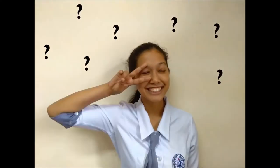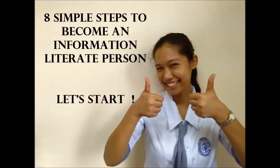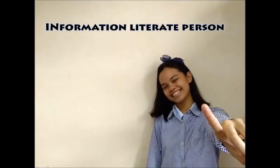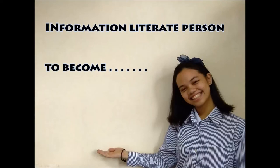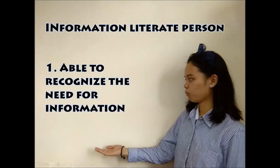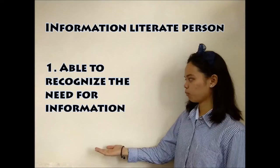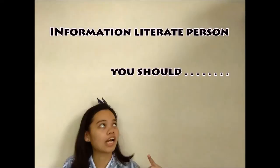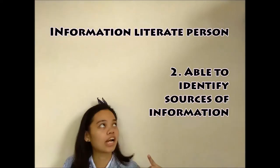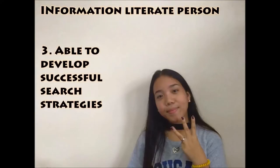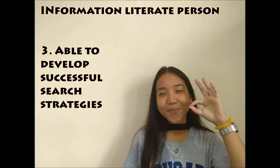Do you have the ability of an information literate person? If not, then you should follow these 8 simple steps. First and foremost, to become an information literate person, you should be able to recognize the need for information. Second, you should be able to identify sources of information. Third, you should develop successful search strategies.